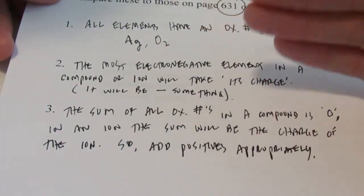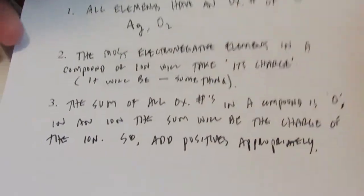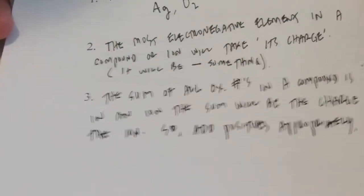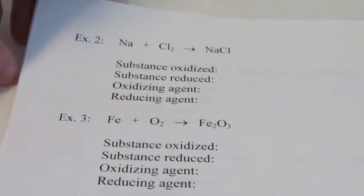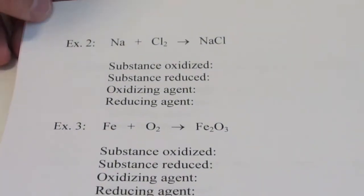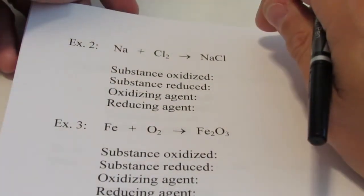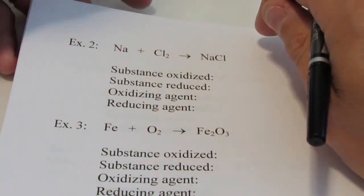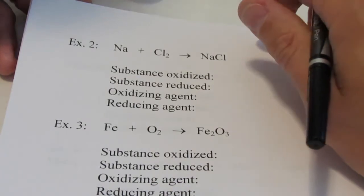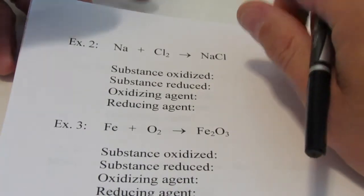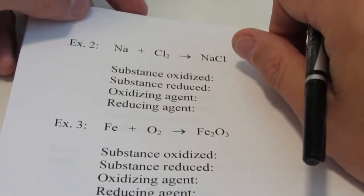We have to add positive charges appropriately. Go back to that previous video if you need a review on how to assign oxidation numbers. We're going to work with the assumption that you now know how to do that.